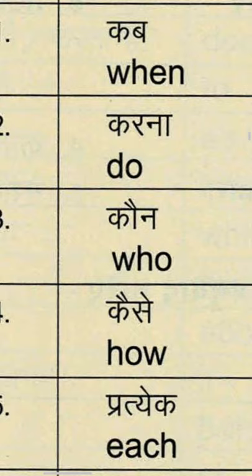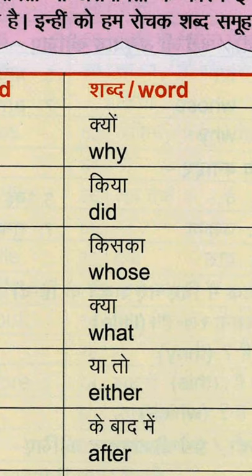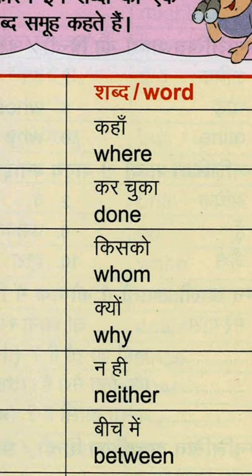करना यानि किसी भी काम को करना — do, do, do. Next है किया — D-I-D — did means किया, जैसे do first form, did second form, और कर चुका यानि done — D-O-N-E — done, यानि कर चुका। फिर है कौन — who — W-H-O. Who are you?